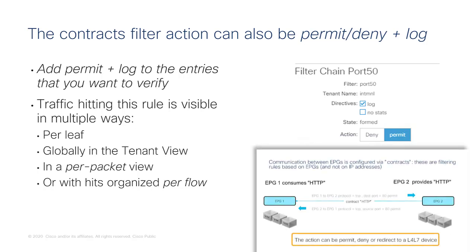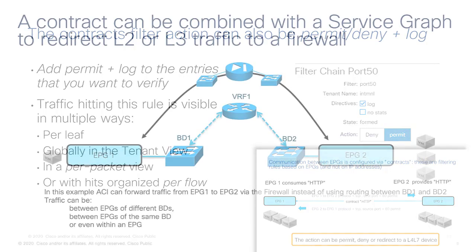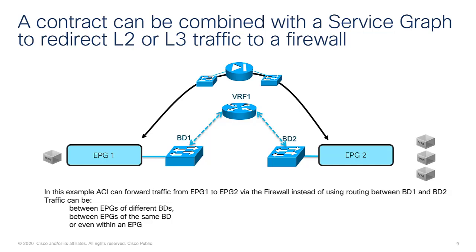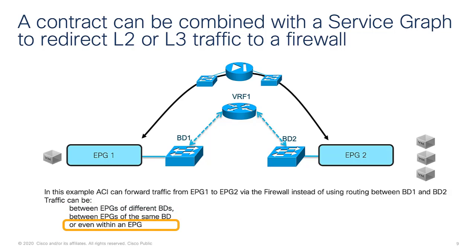We mentioned redirect as a contract action. Redirect is configured by combining a service graph with a contract. In this example, EPG1 and EPG2 are on different bridge domains, and the configuration redirects traffic traversing from EPG1 to EPG2 through a firewall instead. This can apply to all traffic or to specific protocols and ports. The traffic can be from EPGs on the same bridge domain, from EPGs on different bridge domains, or you could even redirect traffic that belongs to the same endpoint group.